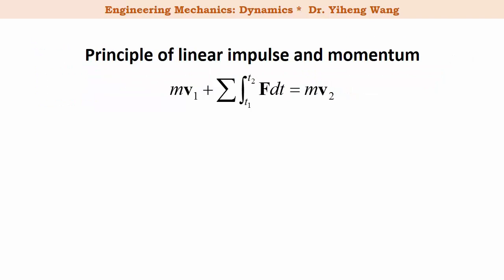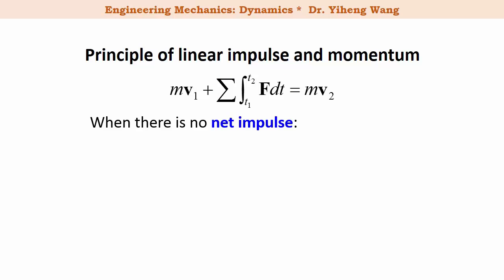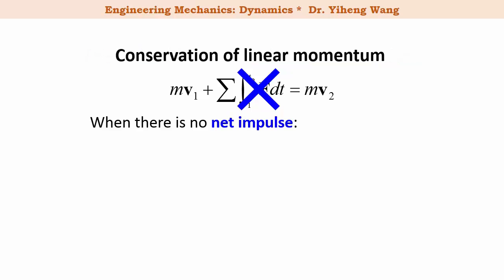We already learned the principle of linear impulse and momentum. Linear impulse is defined as the sum of the total forces acting on a particle integrated from initial time to final time. If there is no net impulse, then this term can be eliminated, and the principle of linear impulse and momentum becomes the conservation of linear momentum, which states that the initial linear momentum of the particle equals the final linear momentum.